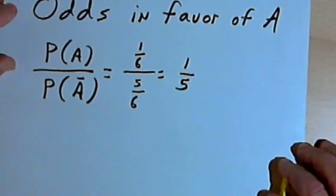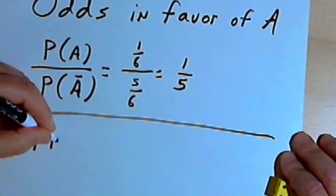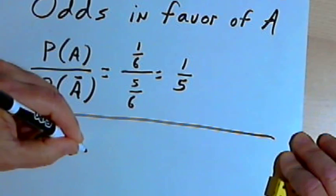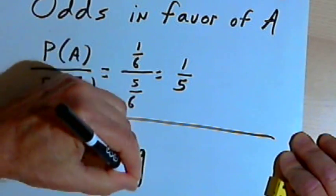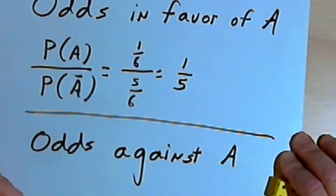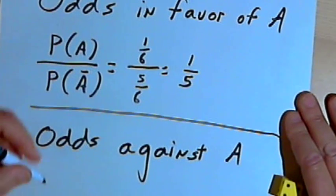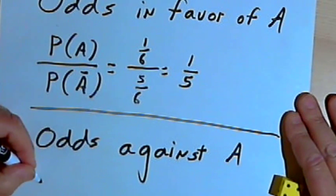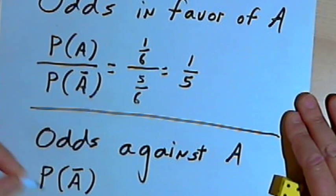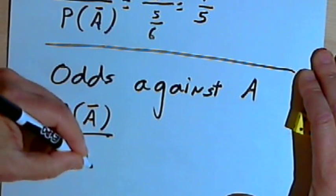We've also got odds against. So we could have the odds against A. And this is just going to be the reciprocal of the odds in favor of A. So the reciprocal of the odds in favor of A would be the probability of not A, the probability of the complement of A, divided by the probability of A.